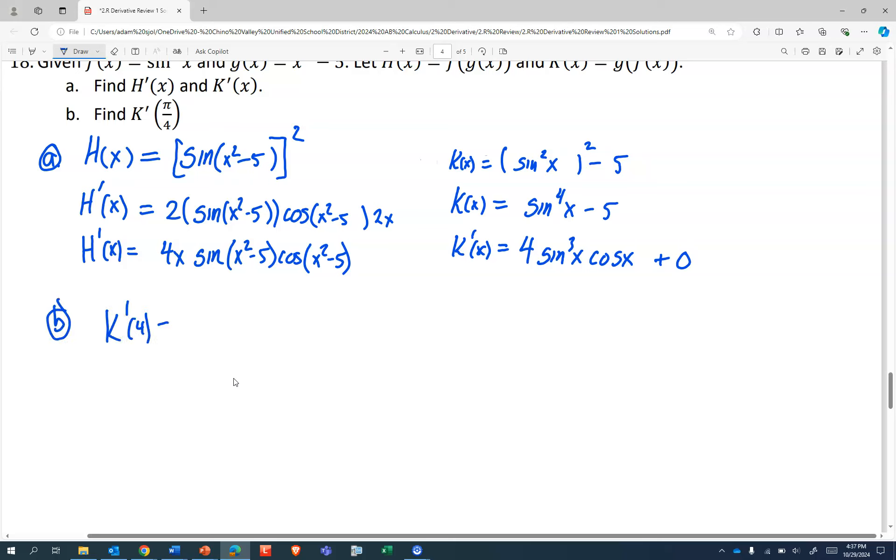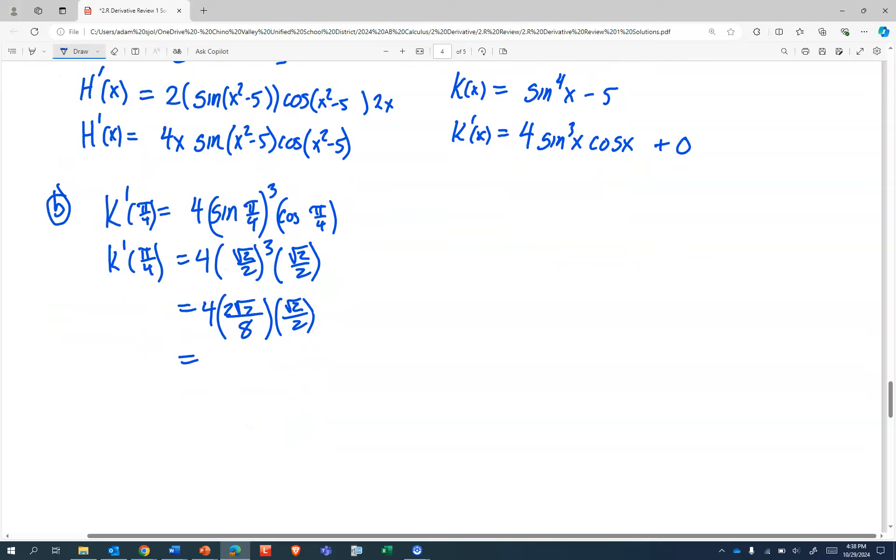So k'(π/4). And that's going to be 4 sin(π/4), and we're cubing that sine, times cos(π/4). I'm relatively certain this is one trig value most of my students know. Sin(π/4) and cos(π/4) are both √2/2. And so, what's that going to be? Let's leave the 4 alone for a second. 2√2/8 times √2/2. That's 4 times 2 times 2 over 8 times 2.